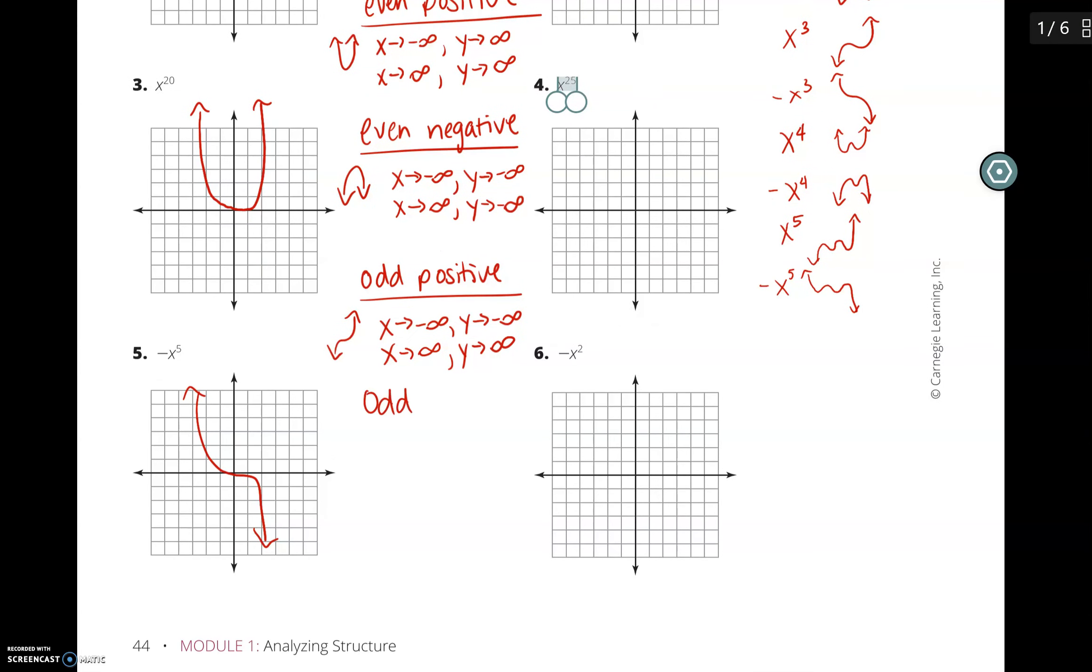And last, if it is odd and negative, as the x values get smaller, the y values will get bigger. Because on the left side of the graph, as the x values get small, the y values get smaller.